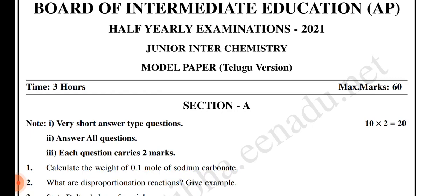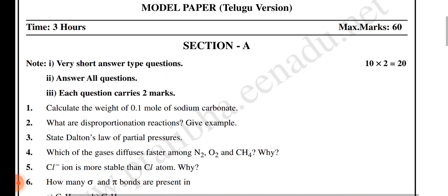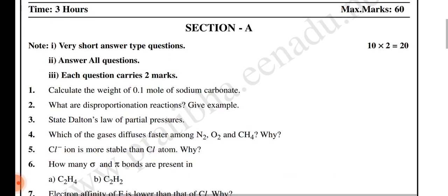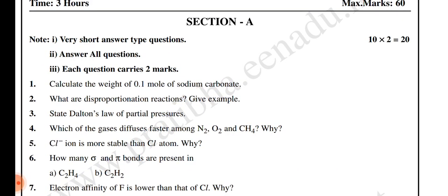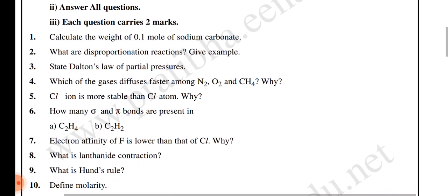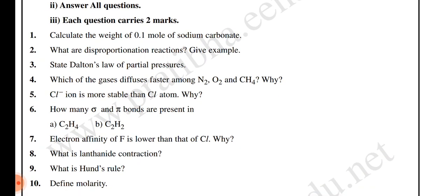In the first paper, we have the first chemistry board model paper. For the first and second questions, we have the second, third, and fourth ones covering states of matter. Next is chlorine for the following question. Then fifth and sixth ones cover chemical bonding.